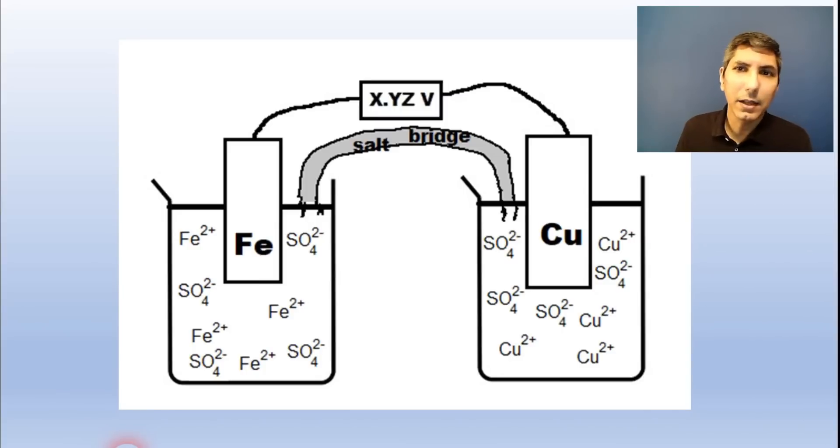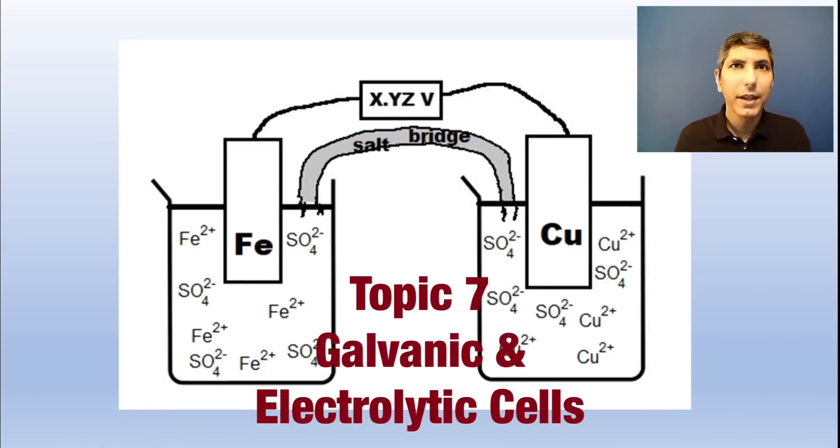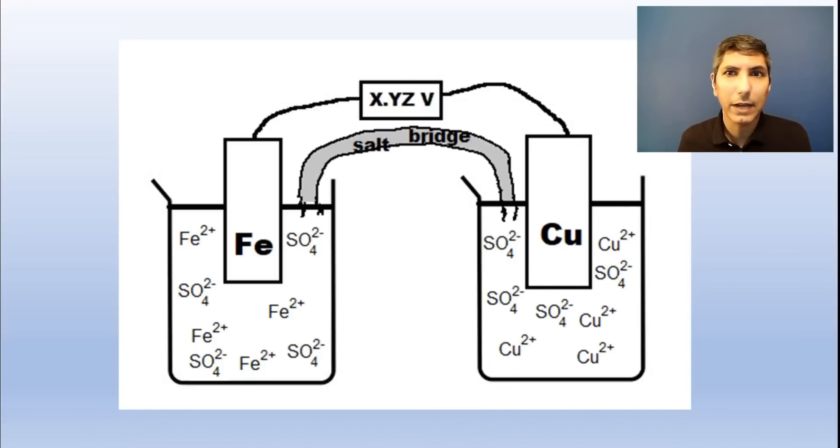A galvanic cell is what most people call a battery. It's thermodynamically favored. It basically uses wires and electrodes to harness the electron flow of a redox reaction to power a load. We use a diagram like this to visualize what's going on in the galvanic cell.